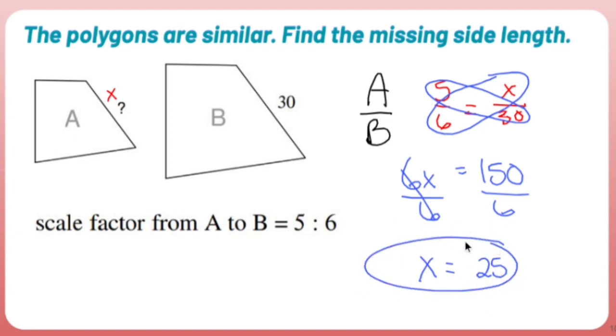So there you have it. There's my X. I really shouldn't circle X because X wasn't in the original problem. I should just say 25. I don't think you'd have a teacher mark you wrong, but if we really wanted to be specific, we would just say the missing side is 25.